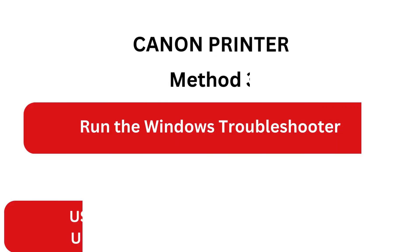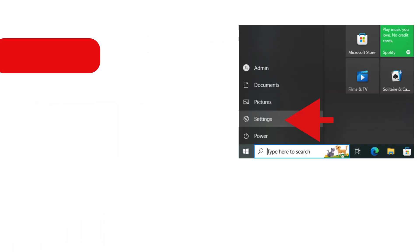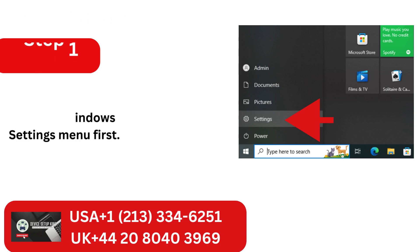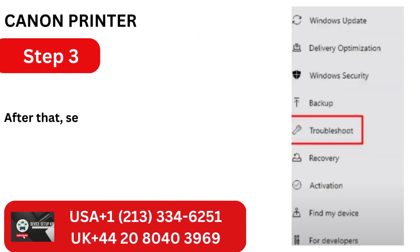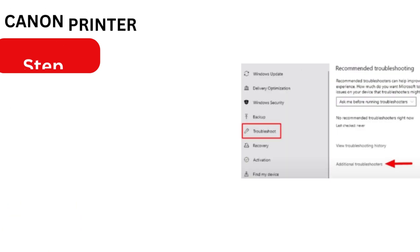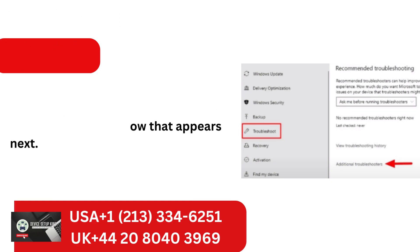Method 3: Run the Windows Troubleshooter. Step 1: Open the Windows Settings menu. Step 2: Next, select the Update and Security menu item. Step 3: After that, select Troubleshoot from the sidebar. Step 4: Choose the Additional Troubleshooters option from the window that appears.